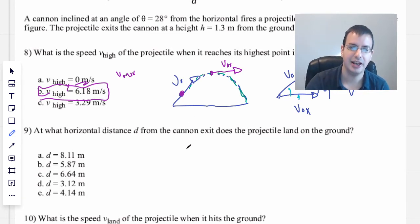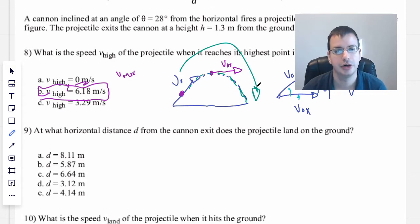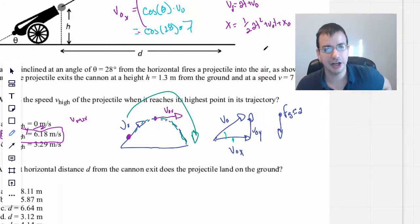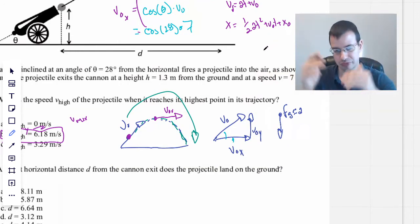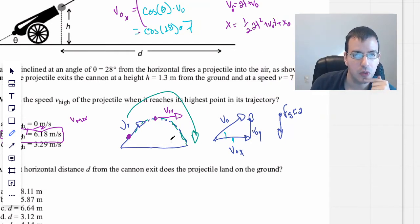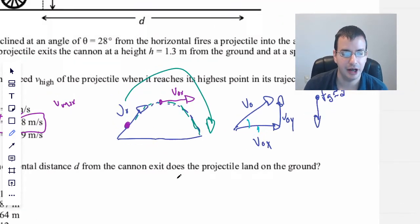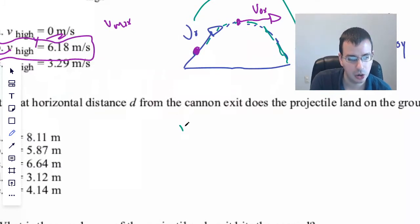So this kind of problem, you're going to see this time and time again in first semester of physics. Long story short, we're going to first find the time of flight, how long it's in the air using the y direction, and then we're going to find x direction to find how far it goes.